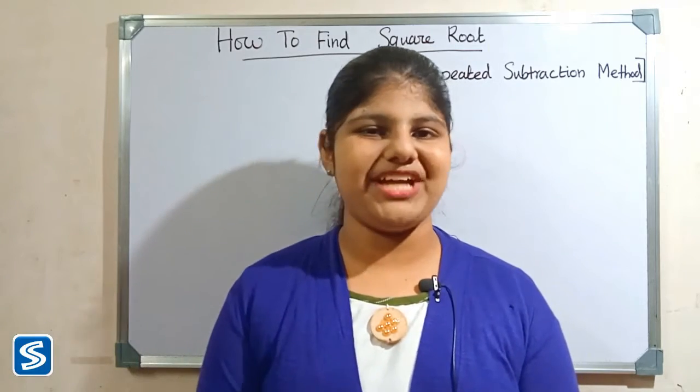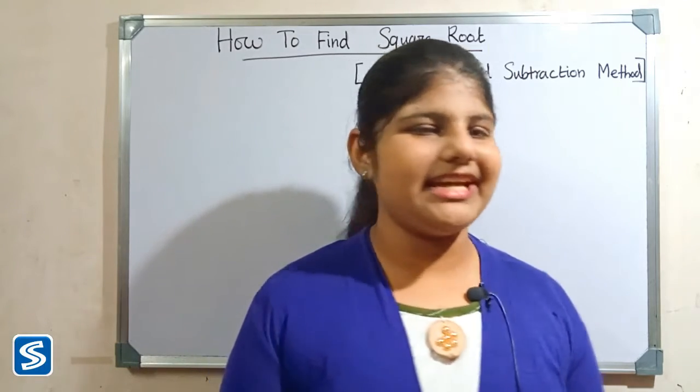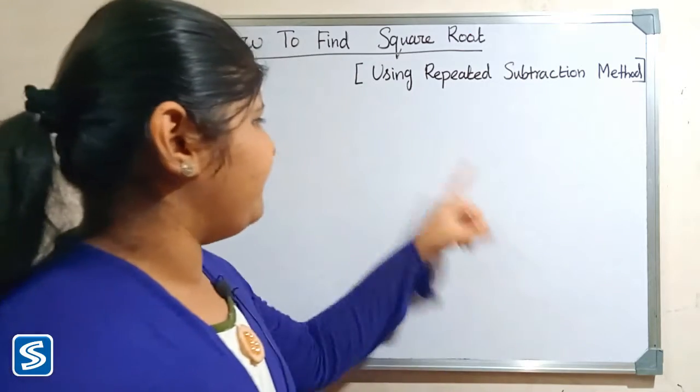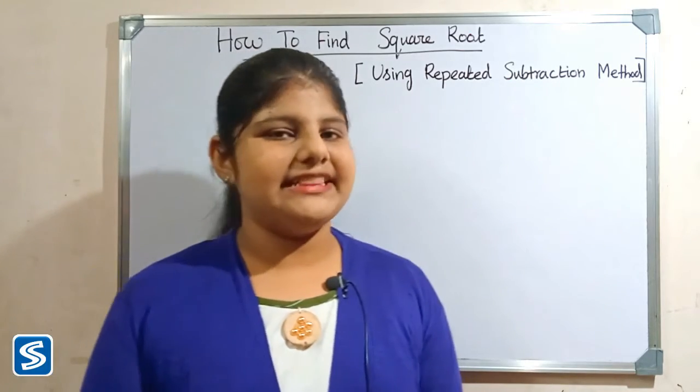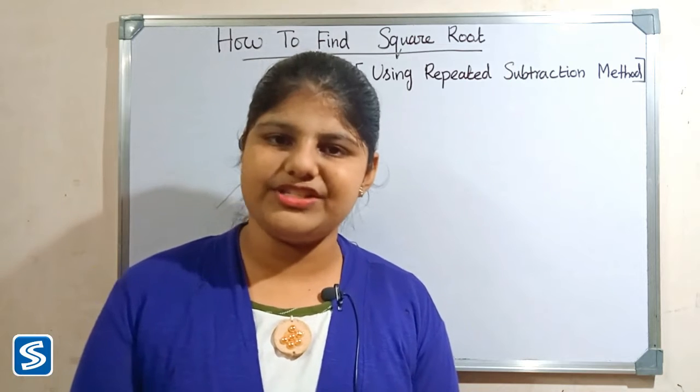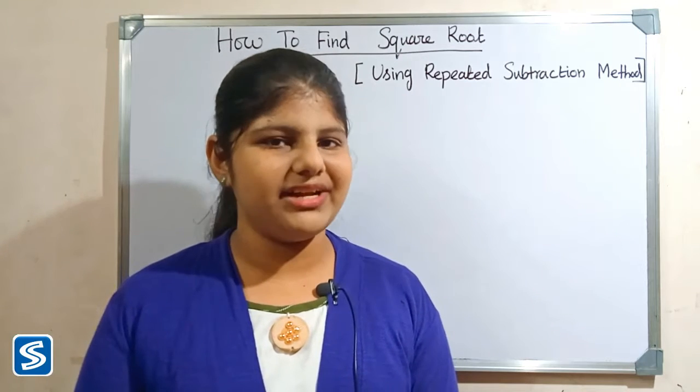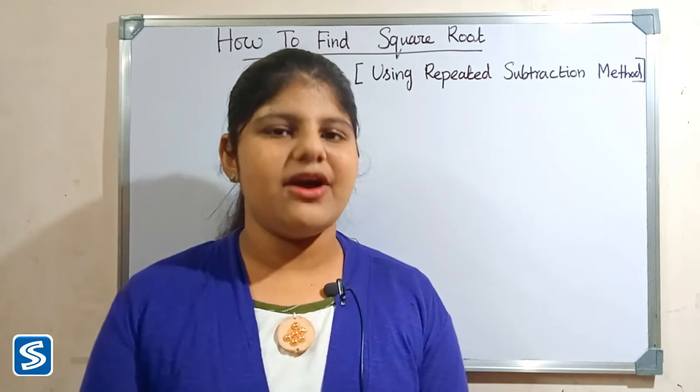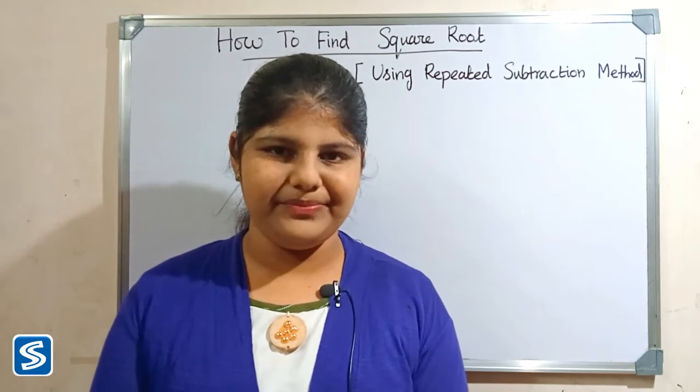Hi friends, welcome to Soumya's channel. In this video, I am going to teach how to find the square root of a given number using the repeated subtraction method. In this method, we have to subtract consecutive odd numbers from the given number until we get zero, and the number of steps is the square root of the given number.